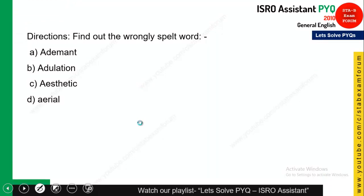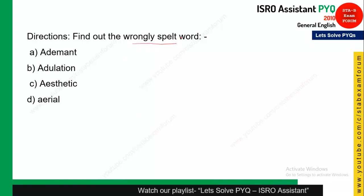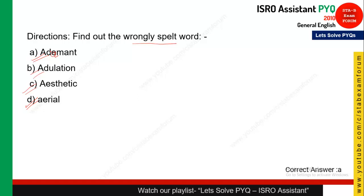This question again involves spelling, but this time you need to choose the misspelled word. Previously we chose the correctly spelt word; now we choose the misspelled one. Out of the four options: 'aerial' — spelling is right; 'aesthetic' — spelling is right; 'adulation' — right. We are left with 'adamant' — the correct spelling should start with 'a,' and the given spelling is incorrect. So option A is the correct answer.